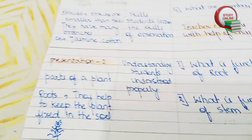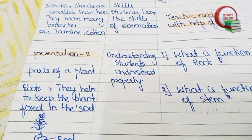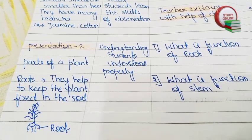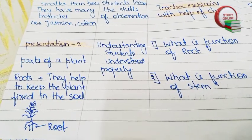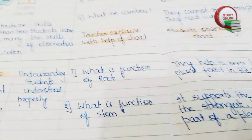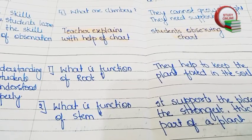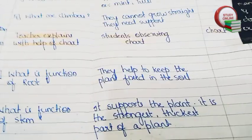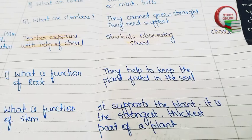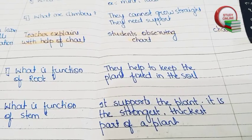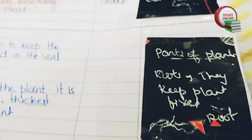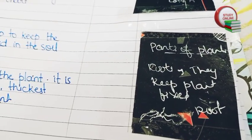Here you can see Presentation Part 2 — we are going to teach parts of the plant. Here you can see roots — we have to explain about roots. Then questions related to that, like what is the function of roots, what is the function of stems — like this we have to ask questions to students. Here is the expected answer that we basically expect from students. And here you can see the blackboard work for this section as well.